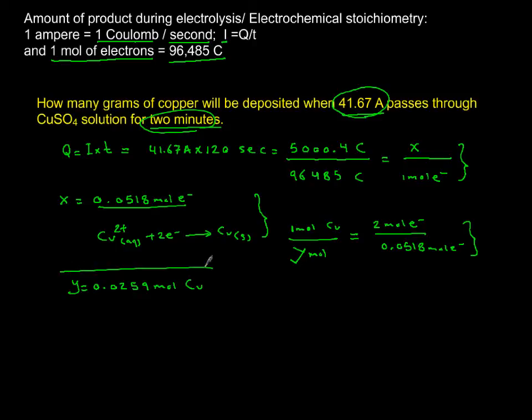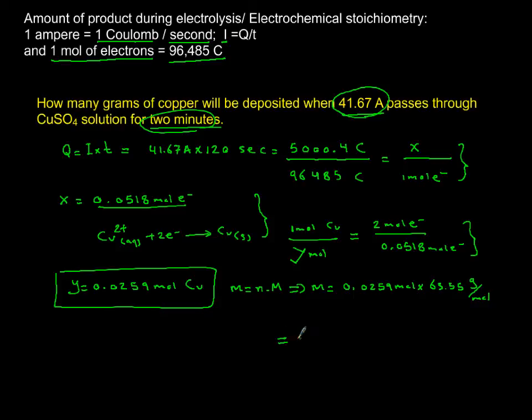The last thing to do is convert it into mass, and mass is simply moles times molar mass. Molar mass of copper is 63.55. So the mass of copper will be 0.0259 moles multiplied by 63.55 grams per mole. And the final answer is you are going to produce 1.65 grams of copper for duration of two minutes and passage of 41.67 amperes.